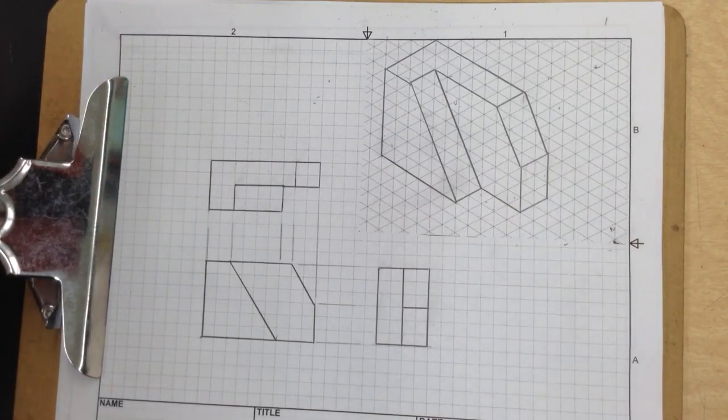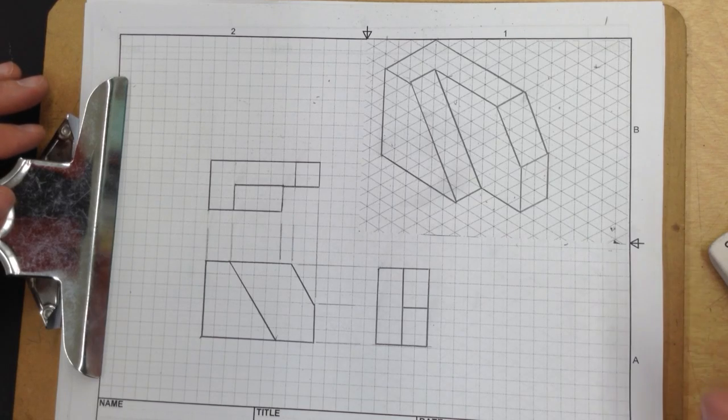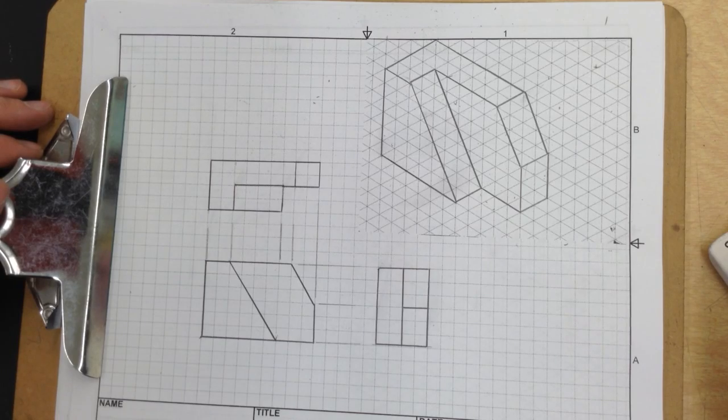Okay. Looks like everything is well represented. This is what the multi-view drawing of this shape is actually supposed to look like. So stop this video, rewind, and replay it as many times as you need to actually get the concept.